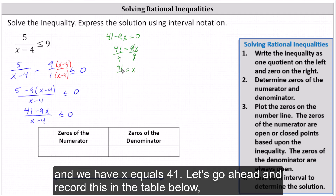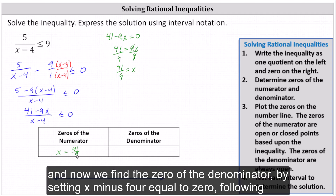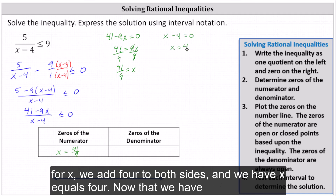Let's record this in the table below. Now we find the zero of the denominator by setting x minus four equal to zero. Solving for x, we add four to both sides and get x equals four.